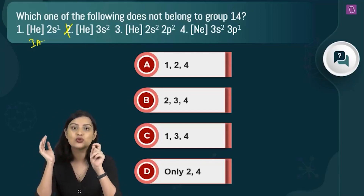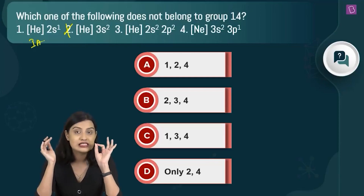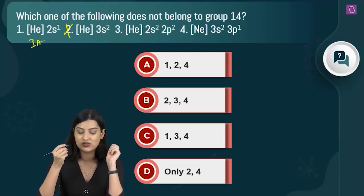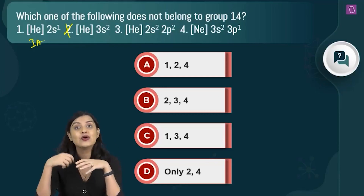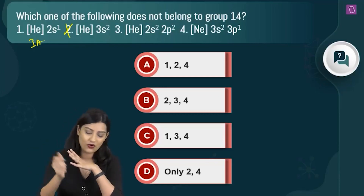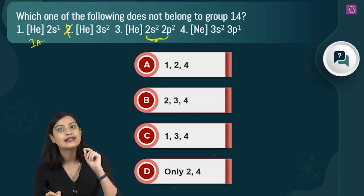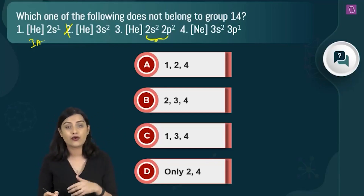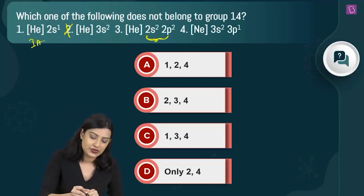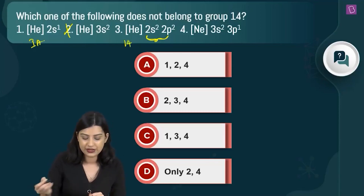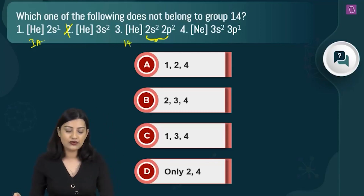Option 3 is helium 2s2 2p2, giving the full configuration 1s2 2s2 2p2 — six electrons, which corresponds to carbon. The outer shell configuration is ns2 np2, which is the hallmark of a group 14 element. So this one does belong to group 14.